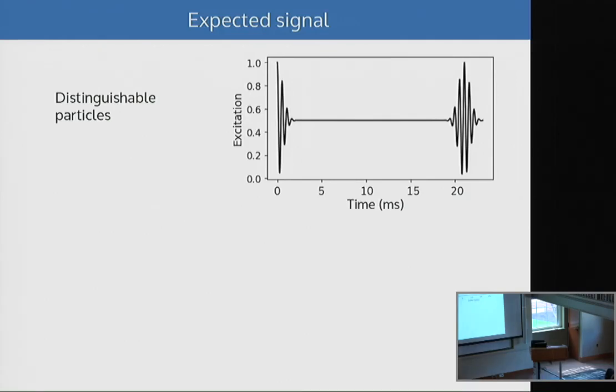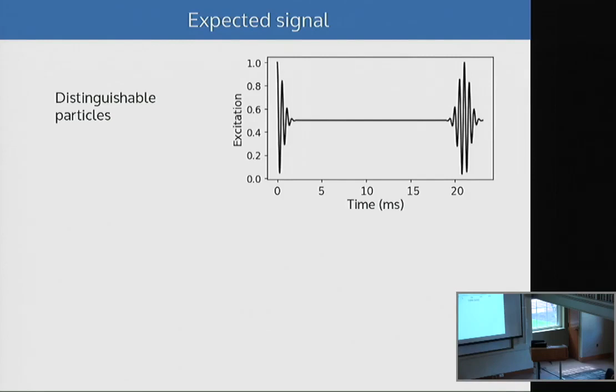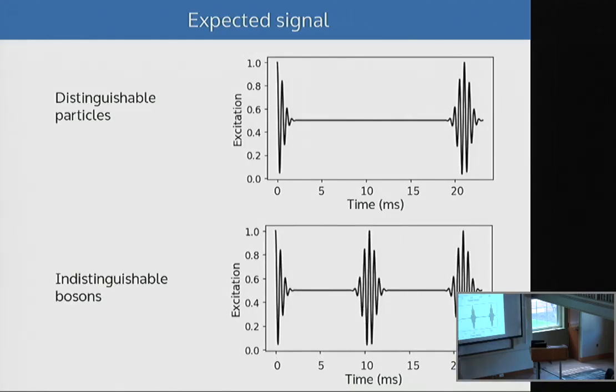That's for distinguishable particles. If you would have indistinguishable particles, you would actually expect that revival already by rotation by pi, not by 2 pi. These are calculations for instance for indistinguishable fermions. So Roy, I think you asked that question about what happens now if we have bosons. When you basically look here, you see the phase shift. So that's what we expect.